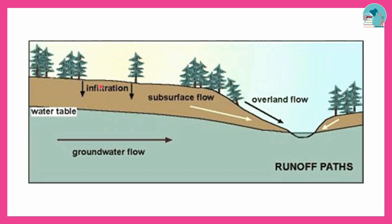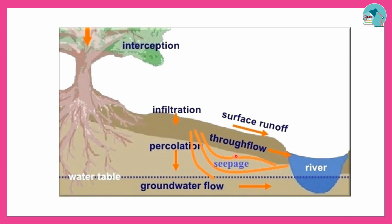The soil area shows infiltration energy. Subsurface flow and groundwater flow together form the base flow. Runoff consists of surface flow, sub-surface flow, and groundwater flow. Overall, this is how infiltration, percolation, and runoff work together.